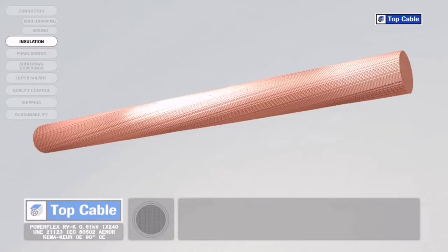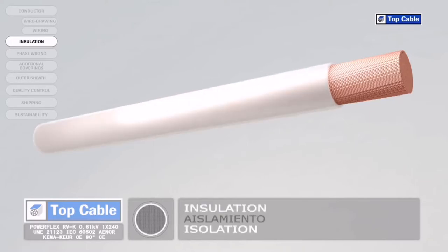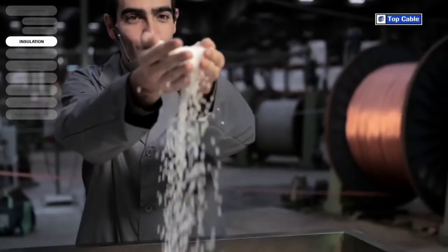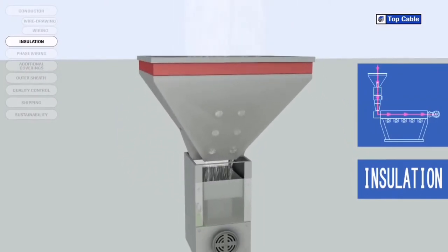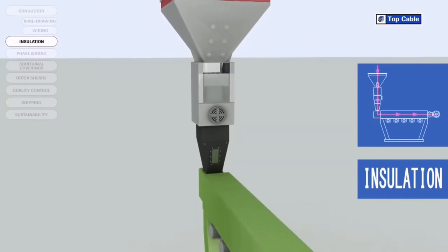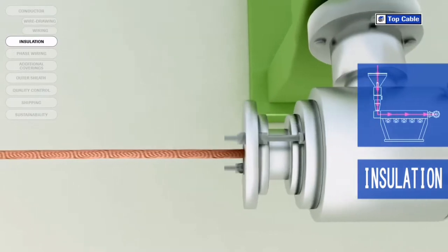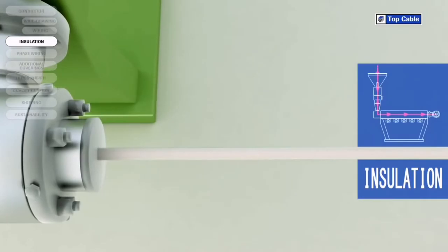The next process in the manufacture of electrical cables is the insulation. This is when we place an insulating cover over the conductor to prevent current leakages. The insulating material is added by a process of extrusion at high temperature. Several insulating materials may be used: PVC, EPR, XLPE, etc. Different insulation materials may be used depending on the characteristics of the cable required.